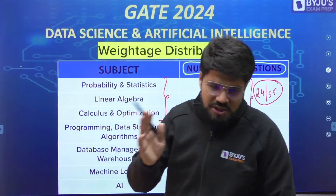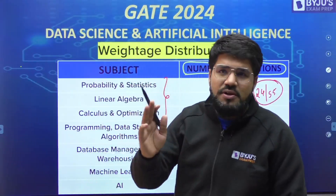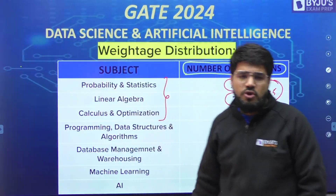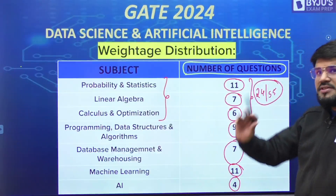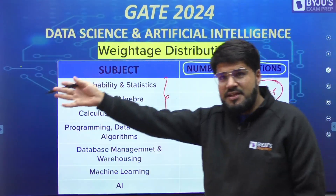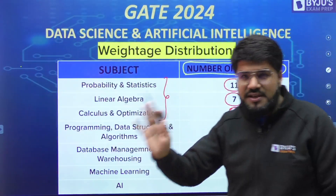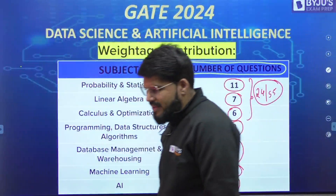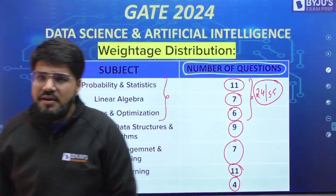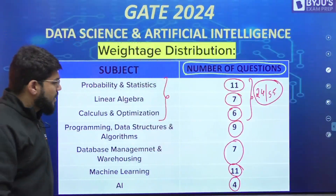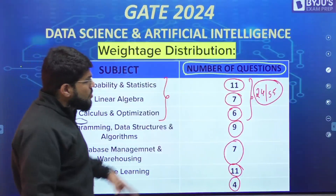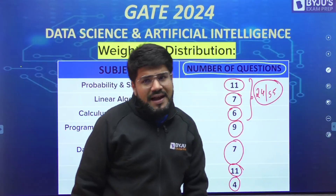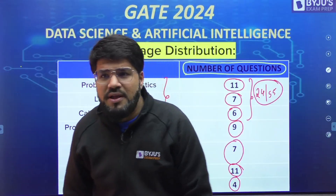Data Science is on the first slot — February 1st, afternoon slot — while the Computer Science exam is the next weekend. So there is a clear one-week gap between the CS paper and the DA paper. Prepare accordingly.